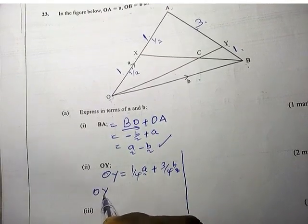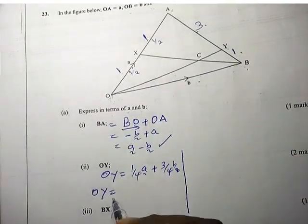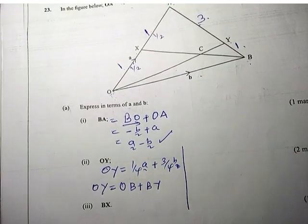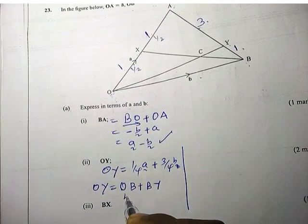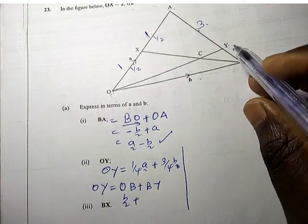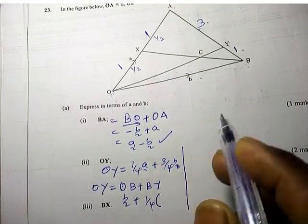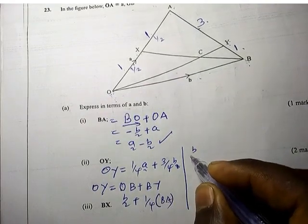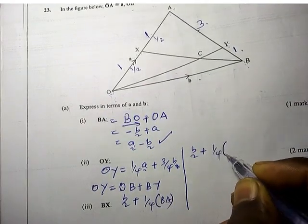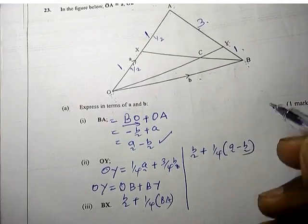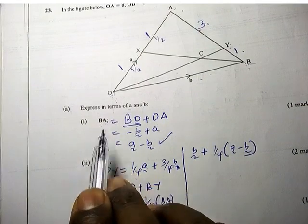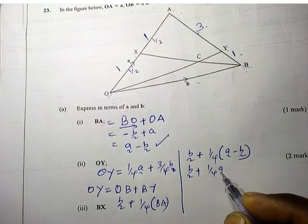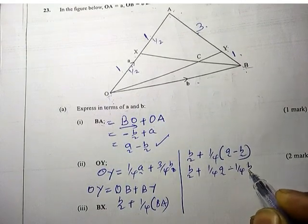Using the normal way: OY is equal to OB plus BY. OB is vector B, and BY is 1 over 4 of BA. We have BA, so that is vector B plus 1 over 4 times (A minus B), expanding to give B plus 1 over 4A minus 1 over 4 vector B.